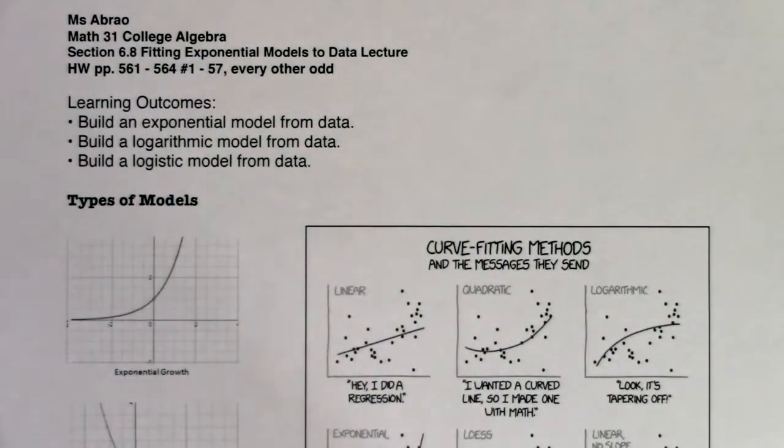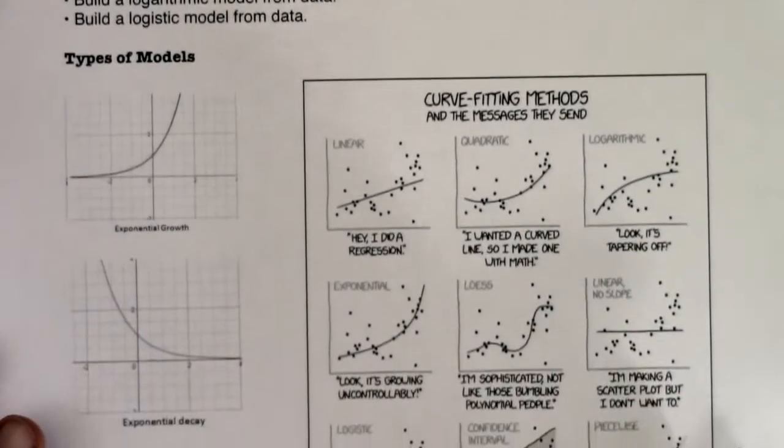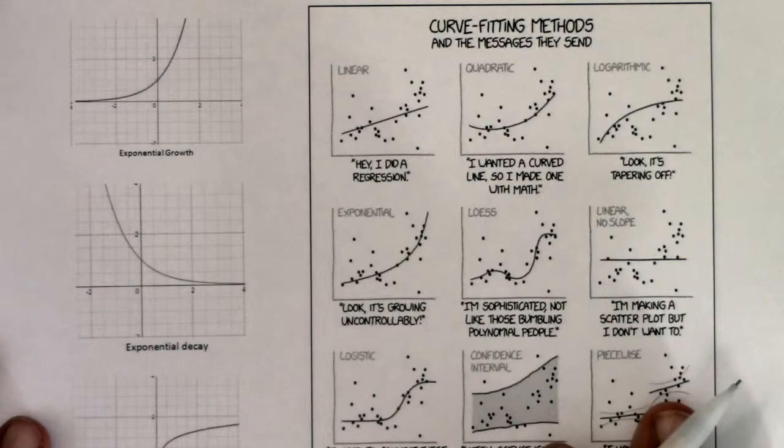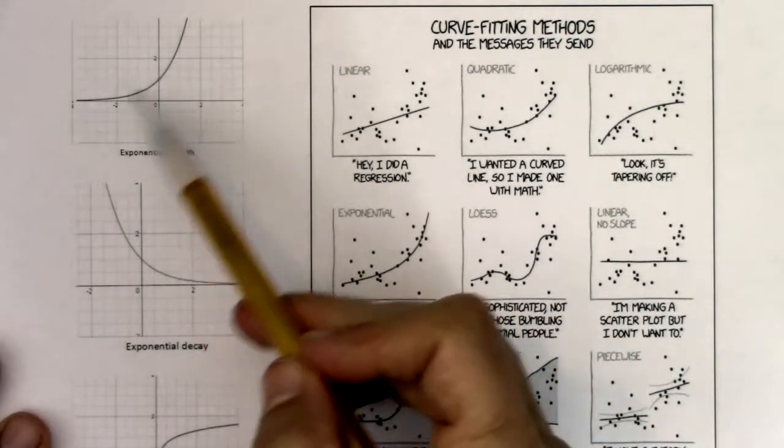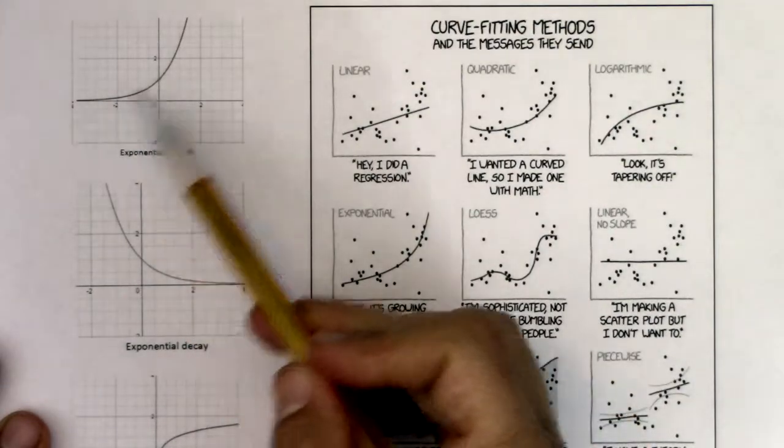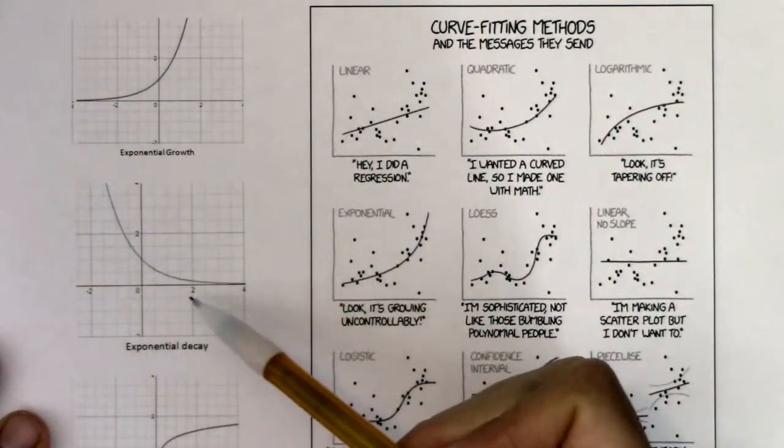I put all sorts of types of models on this front page. There's no actual work on this page, but I want to talk about what I put in here. This is your basic exponential growth versus exponential decay. Base is larger than one, base is smaller than one.